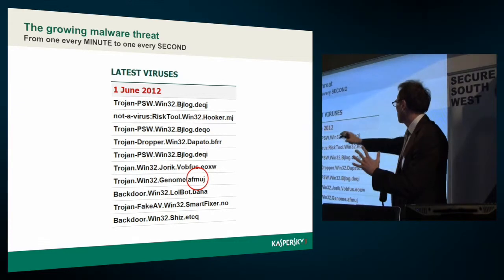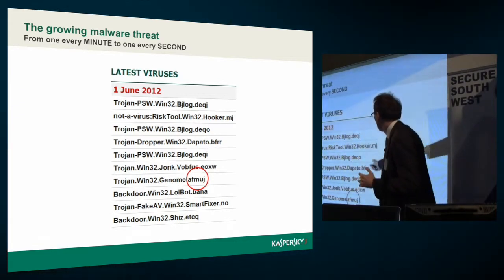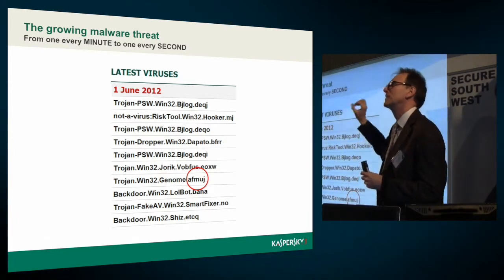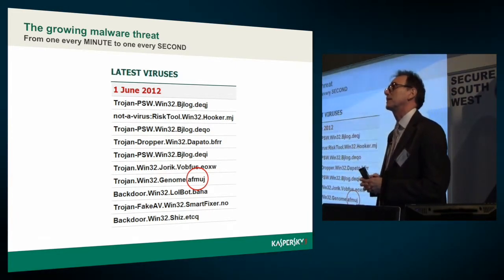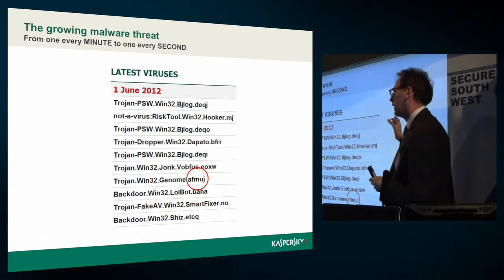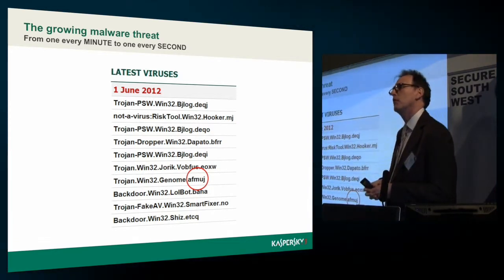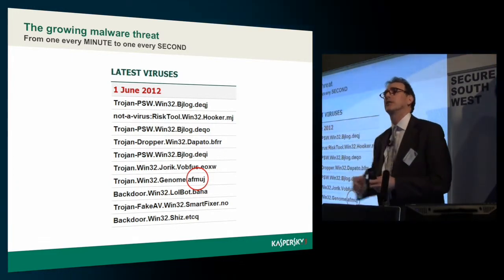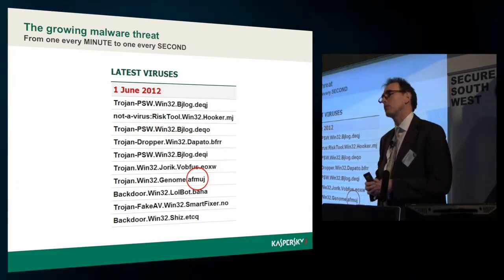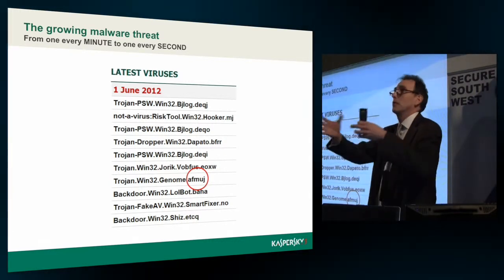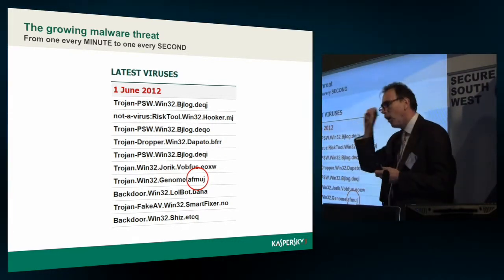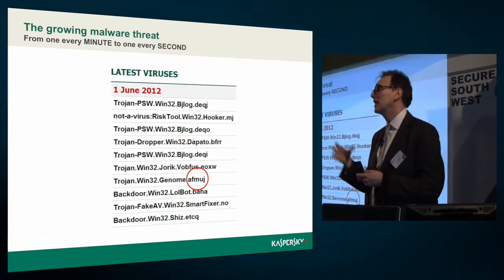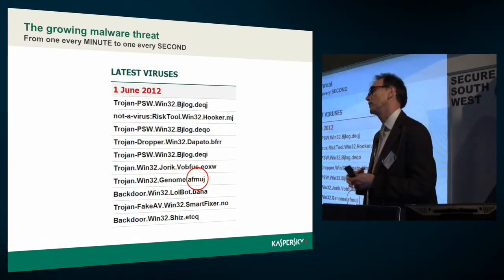If we look at the structure of these things, on the right front side of this classification, you've got the identifier of what variant it is. That picks up a point about variants — it's actually that huge increase in volume we've seen, not just over the last five years but over the last 25 years. Increasingly, it is variants of the same malware family.